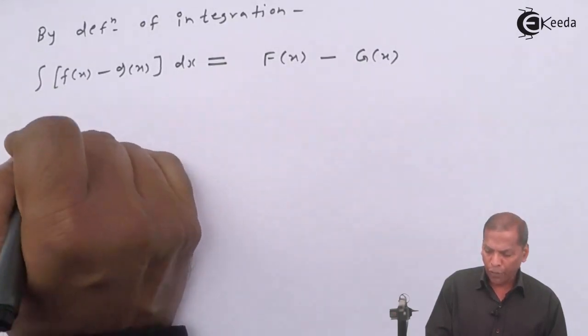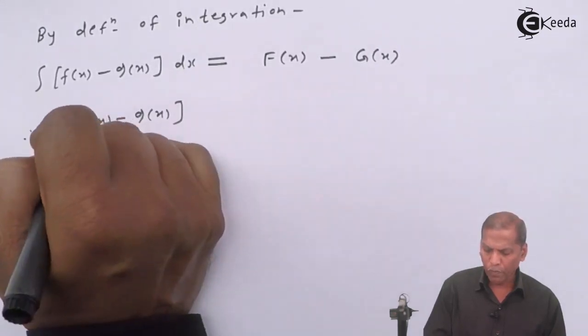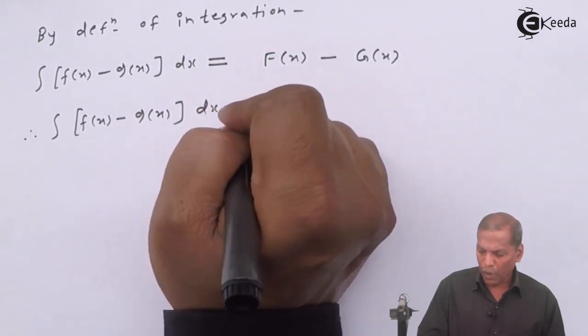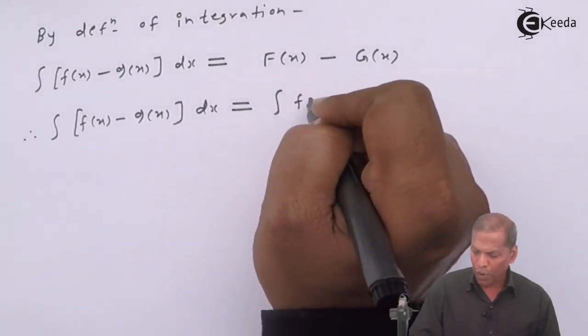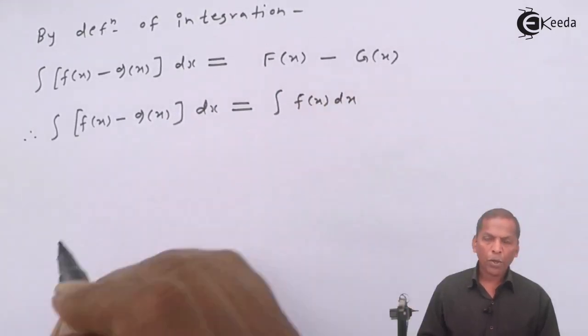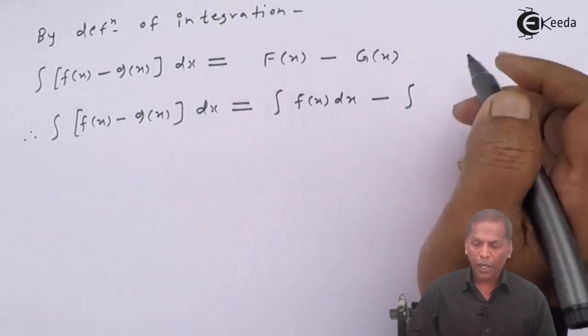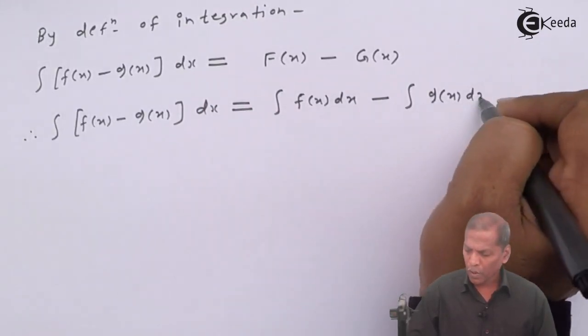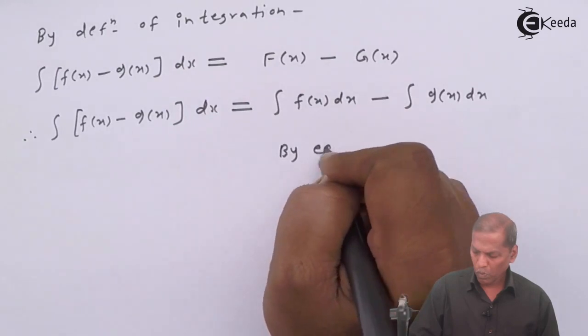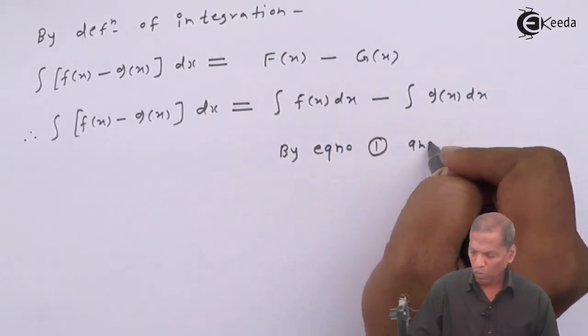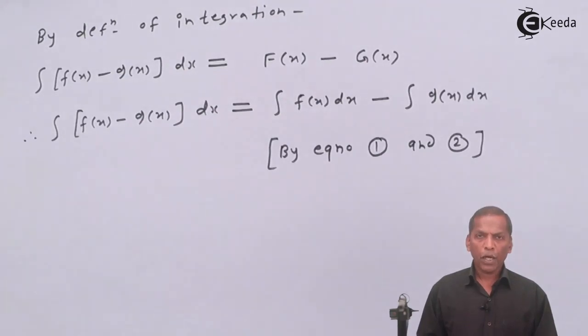Therefore, the next step will be: integral of [f(x) - g(x)] dx equals capital F(x), which is nothing but integral f(x) dx by using equation 1, minus capital G(x), which is nothing but integral g(x) dx by using equation 2.